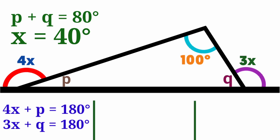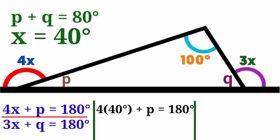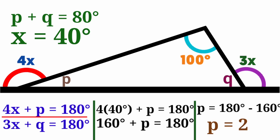Coming back to the equation 4x plus P equals 180 degrees, we substitute x equals 40: 4 times 40 is 160 degrees. So 160 plus P equals 180 degrees, meaning P equals 180 minus 160, which is 20 degrees.